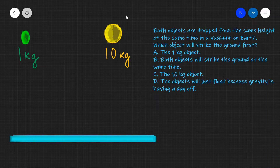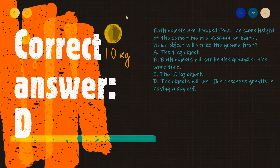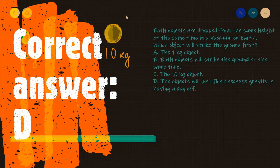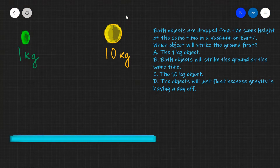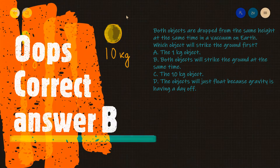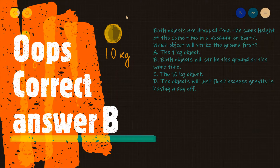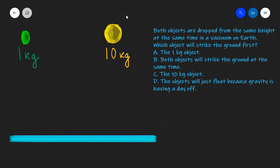The correct answer is D — the objects will just float away because gravity is having a day off. Actually, no — the correct answer is B. Both objects are going to strike the ground at exactly the same time.